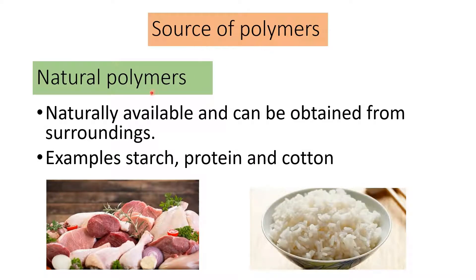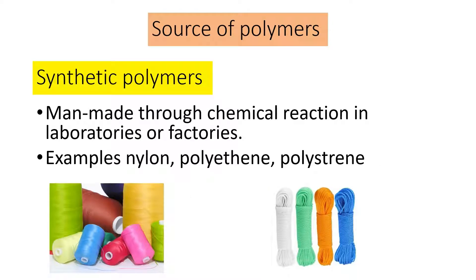The first source is natural polymers — naturally available and obtained from the surroundings. Examples include starch from rice, protein from meat, and cotton from trees. The second source is synthetic polymers — man-made through chemical reactions in laboratories or factories. Examples include nylon, polyethene, and polystyrene.